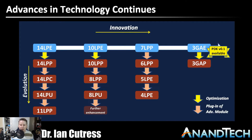With 3 nanometer it goes 3 GAE to 3 GAP, which is further down the line. But the process here is simple: you're changing the way the process node is being optimized and you decrease the number by one.